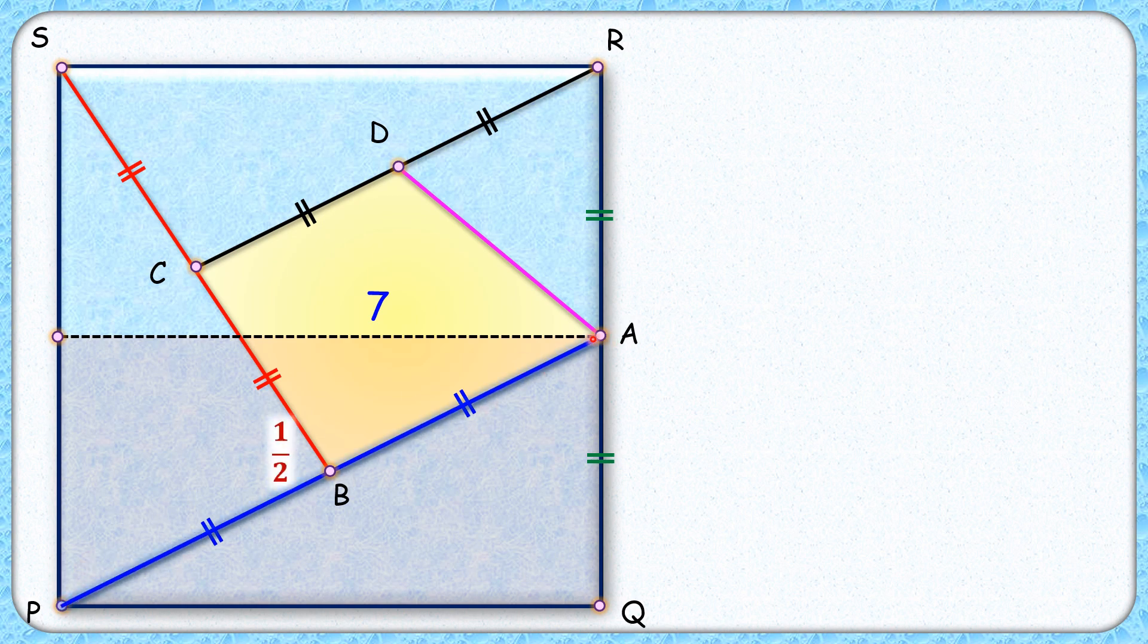In a rectangle, the diagonal divides it into two equal regions. So each triangle will be one-fourth the area of the square. So area of this triangle is one-fourth the area of the square.